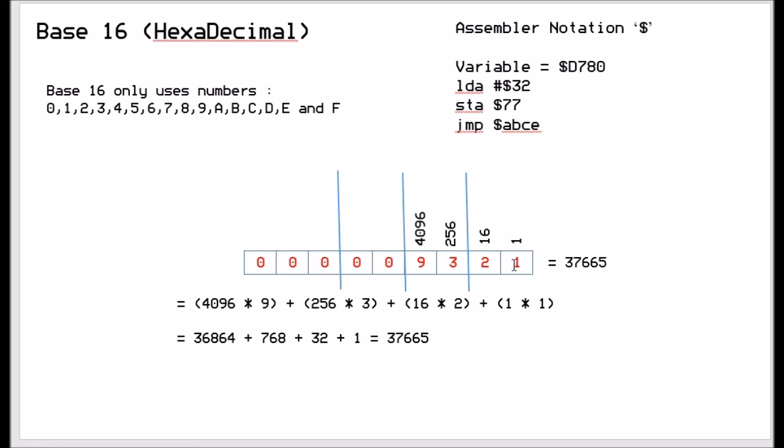So here we have a representation here, and same thing again in the columns. So the first column is 16 to the power 0 is equal to 1, then 16 to the power 1 is 16, 16 to the power 2, 16 to the power 3. I haven't done any more because the numbers got so big it was getting a bit silly. And so you can then put any number between 0 and 9, A, B, C, D, E, and F into here. So with this number here, as we did with the binary, we do 9 times 4096 plus 3 times 256 plus 16 times 2 plus 1 times 1, which works out to 36864 plus 768 plus 32 plus 1, which equals 37665.